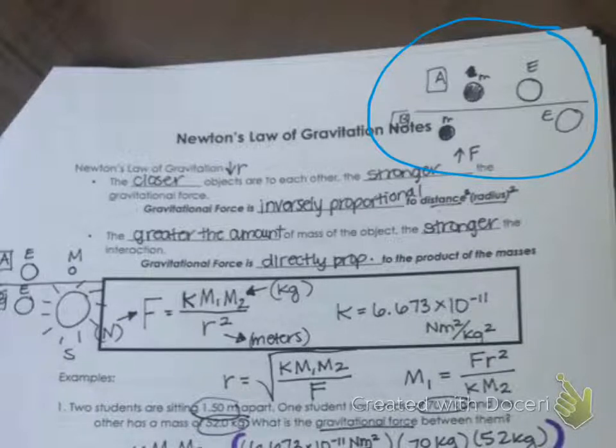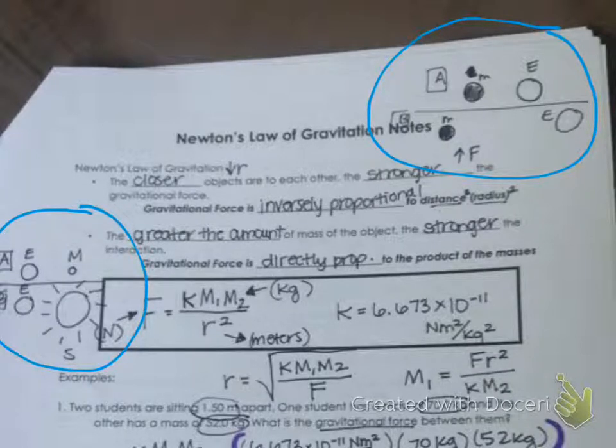Then I draw this picture, and I tell them that we're talking about gravitational force and mass. So I give them two situations: the Earth and the Moon, and the Earth and the Sun are the same distance apart. And I tell them this would never happen, but if it were to happen, which one would have a greater gravitational force?